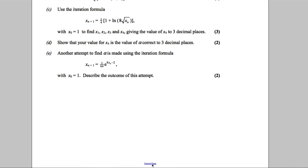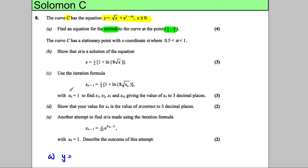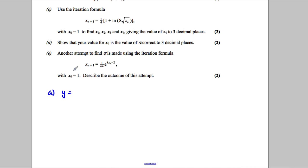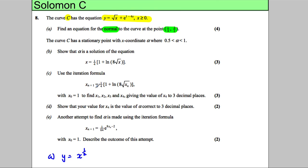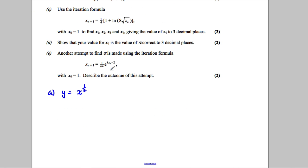For part A, we have y equal to the square root of x, which I'm going to write in index form as x to the power of a half, add e to the power of 1 subtract 4x. We're going to differentiate this, so dy by dx: differentiating x to the half, bring down the half, giving x to the power of negative a half.